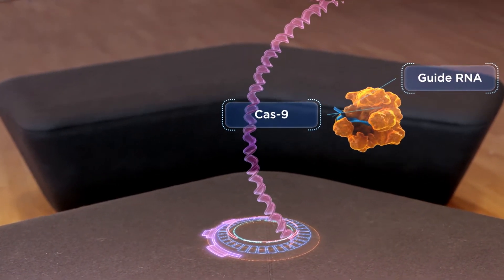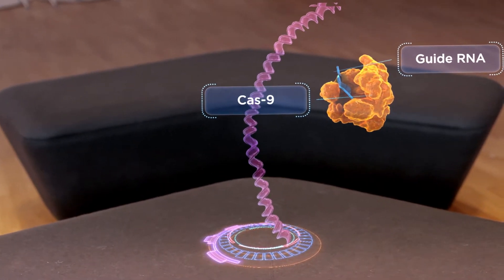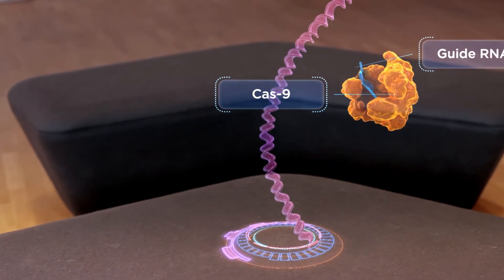Once the mutated gene is removed, the cell can respond by repairing the damaged DNA, possibly restoring CFTR protein function. Zoom out.